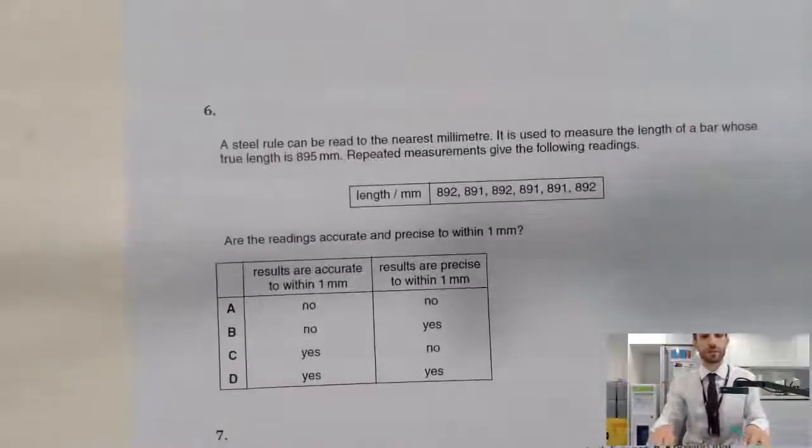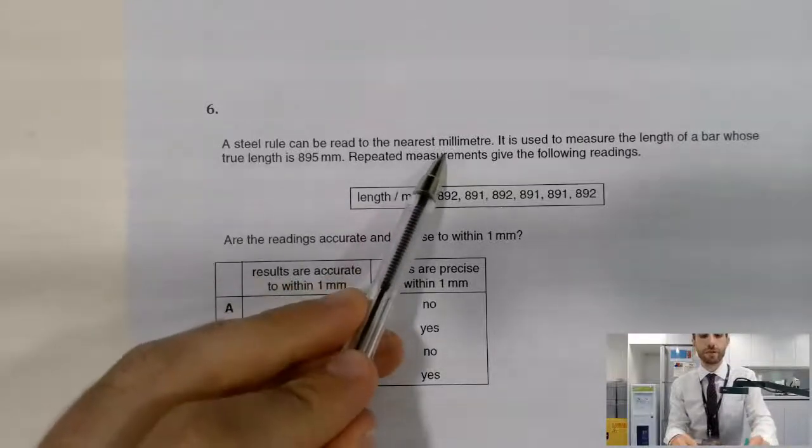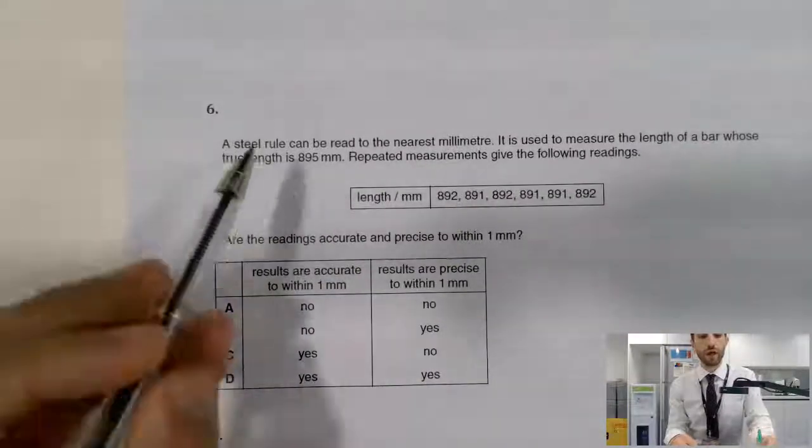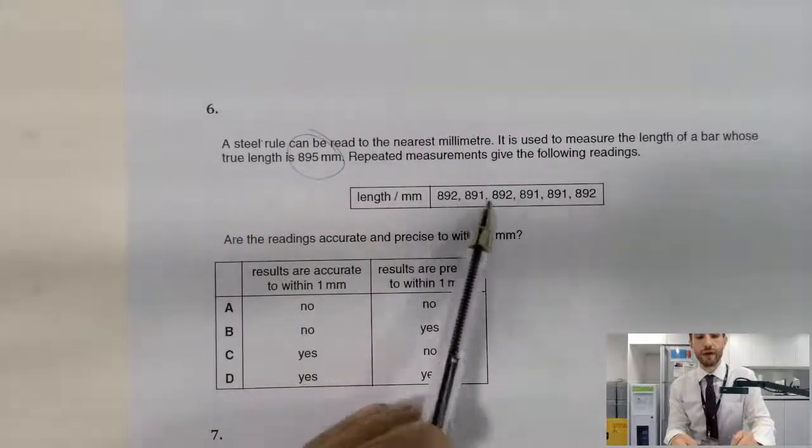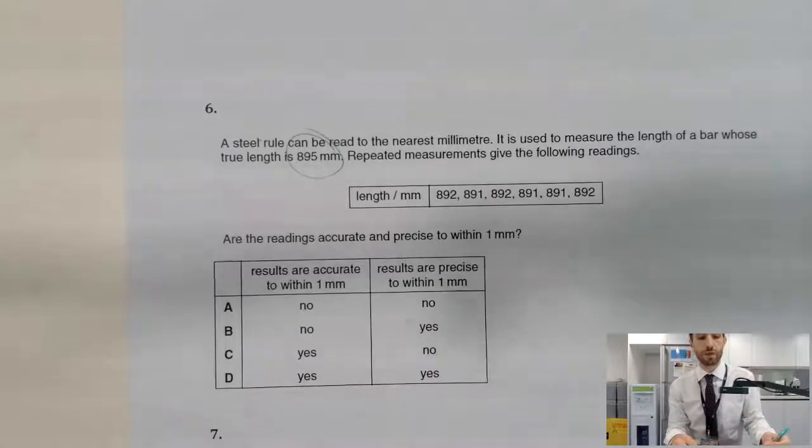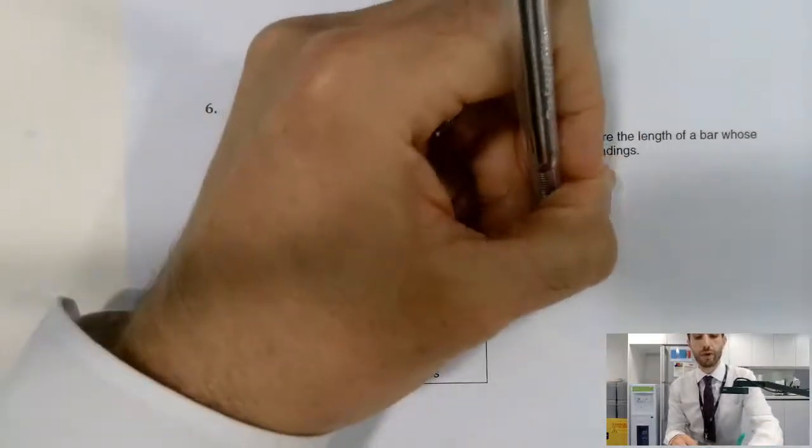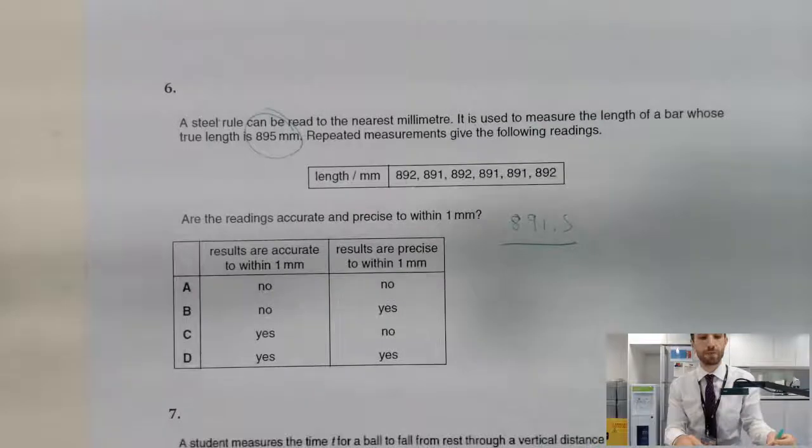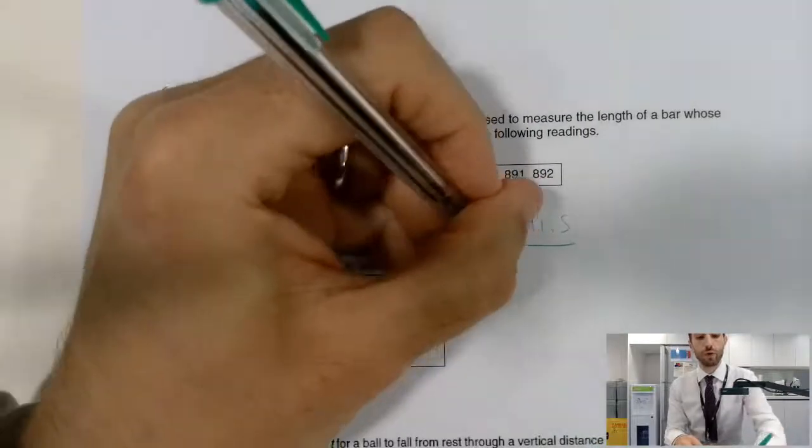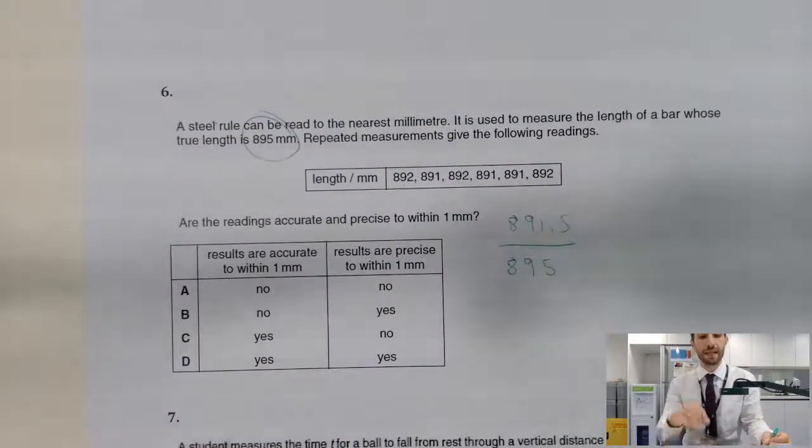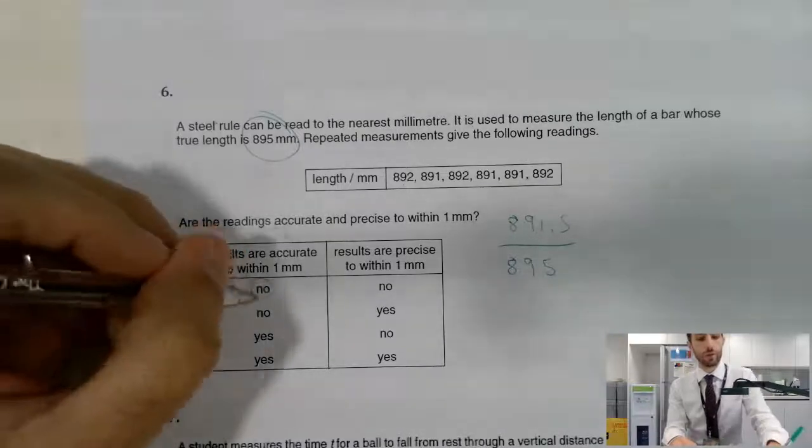We're almost there. Question number six. A steel rule can be read to the nearest millimetre. We've got the length of it is 8.95 and we've got repeated measurements, all of either 8.91 or 8.92, six of each. We take the average of that, it will come out as 8.915. All we have to do is add these guys up and divide them by six. So are they accurate to within one millimetre? Well, the value you want is 8.95. We're getting 8.915, which is fairly close but not close enough. It is not accurate to within one millimetre.